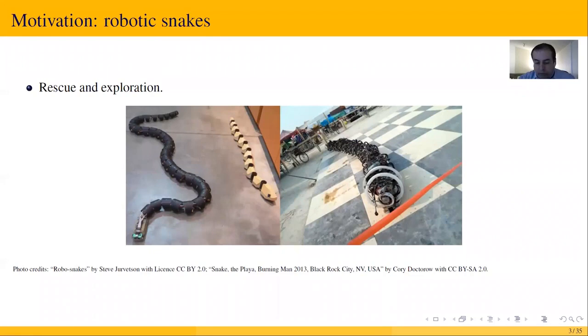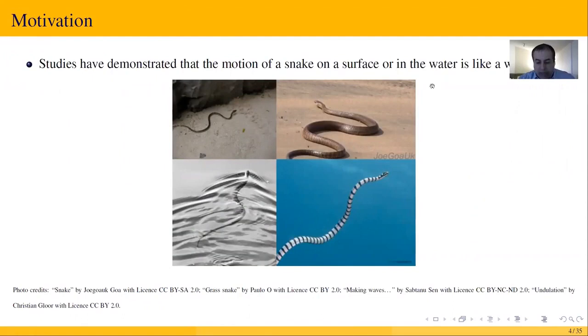A study made by Bruce Jayne from the University of Cincinnati revealed that the displacement of a snake on a rough surface or underwater is produced by its wave motion, which is manifested by the undulation of its body.